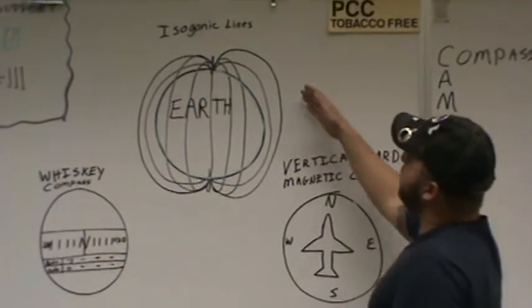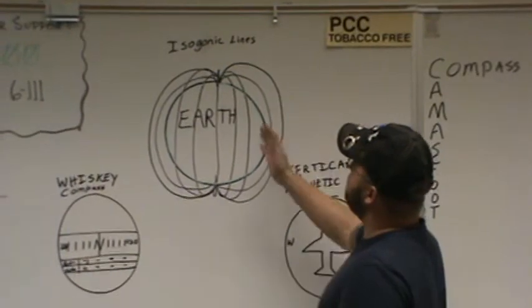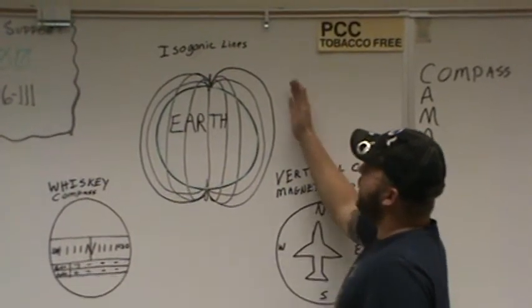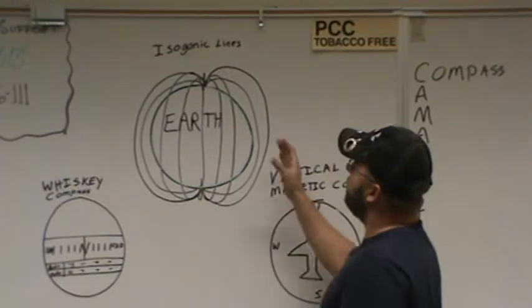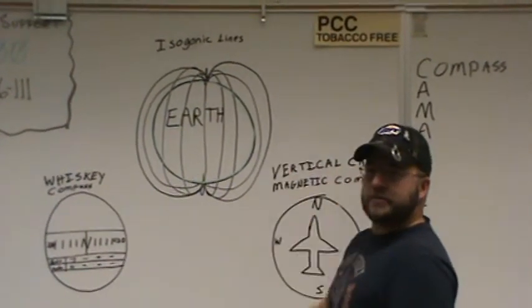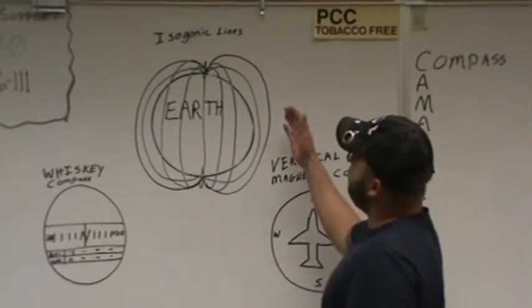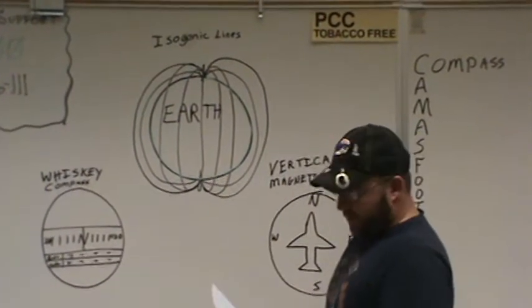The isogonic lines, however, are what our compass uses to line up to magnetic north. And because they don't line up exactly with true north, they're actually off, I believe it's 1,200 miles seeking an iron deposit. We have to compensate that with variation.